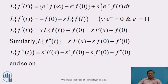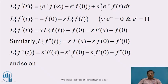Similarly, we can prove that Laplace Transform of f''(t) equals s²·F(s) − s·f(0) − f'(0), and Laplace Transform of f'''(t) equals s³·F(s) − s²·f(0) − s·f'(0) − f''(0), and so on. When we observe the right-hand sides of these three results, all terms are negative except the first term, and in the first term, the degree of s is the same as the order of the derivative of f(t). In each successive term, the degree of s decreases by 1, and in the last term, s is absent.